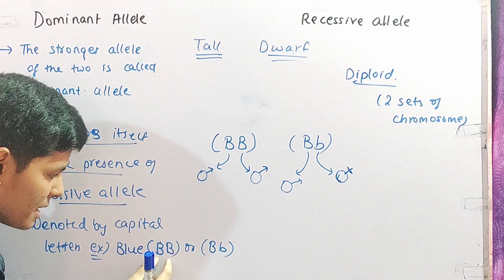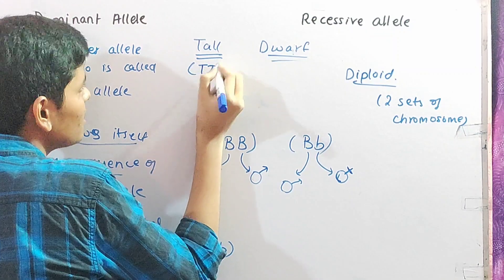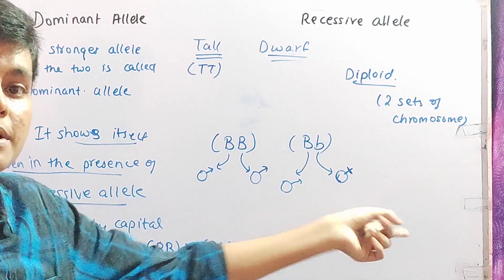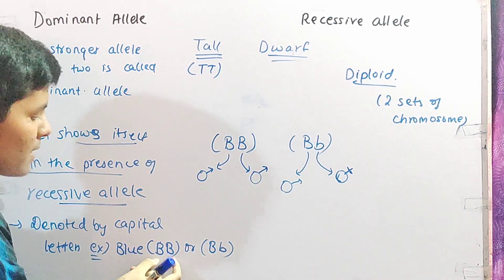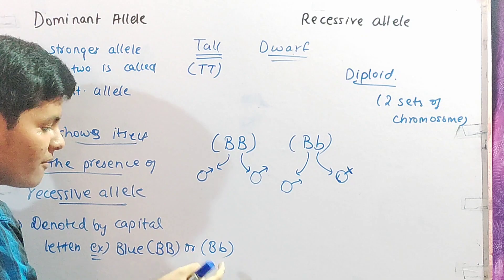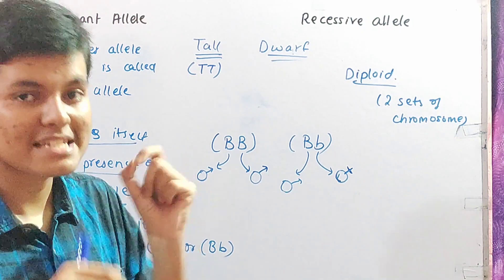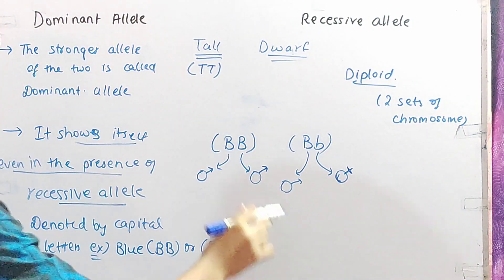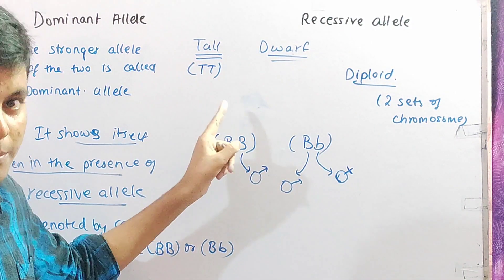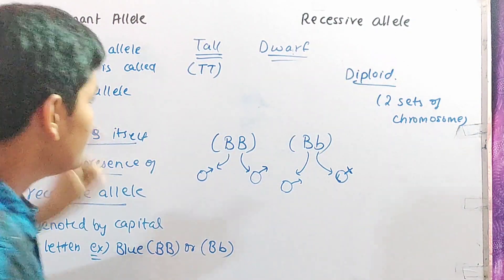So the dominant allele shows itself in the presence of a recessive allele as well. Even if the recessive allele is present, if you look at the color of the eye it will be blue. This was the concept of the dominant allele. What is a recessive allele? The name recessive suggests it is weak. The weaker allele of the two is the recessive allele and it cannot show itself in the presence of the dominant allele.